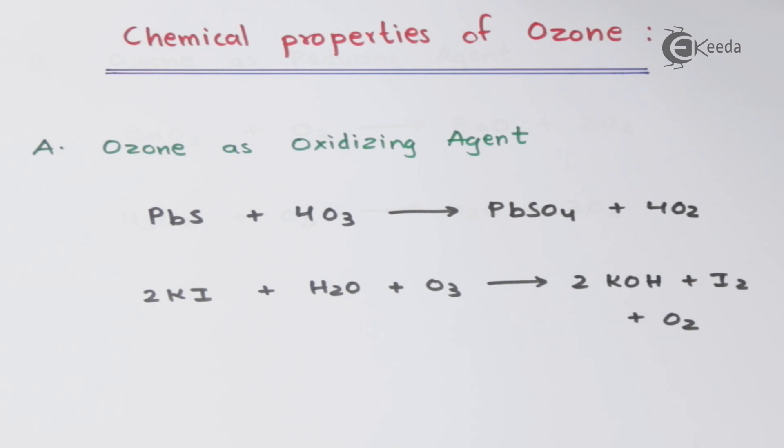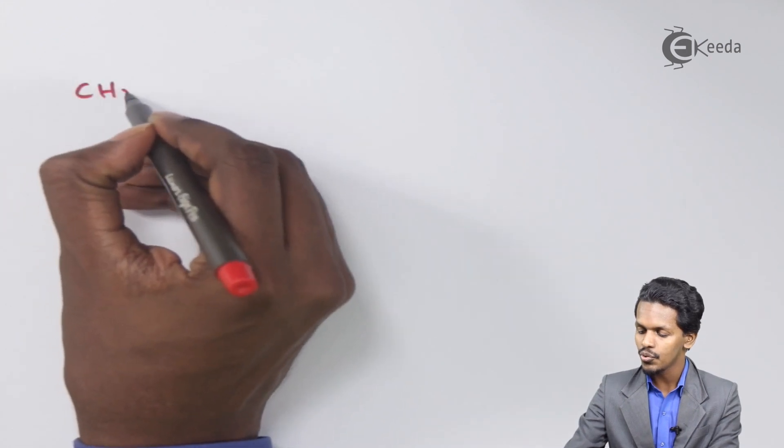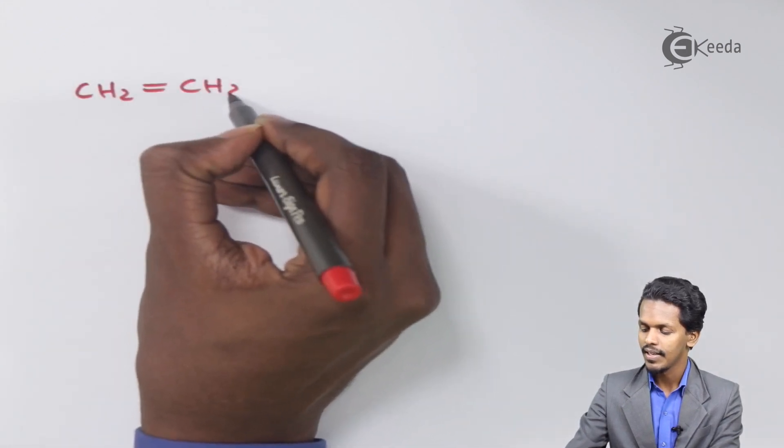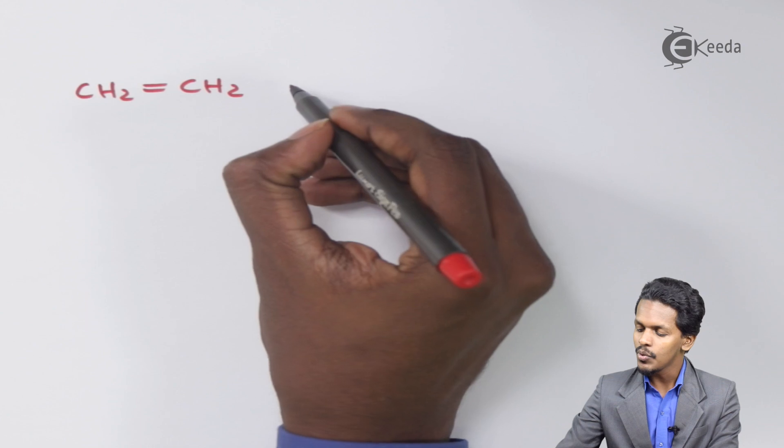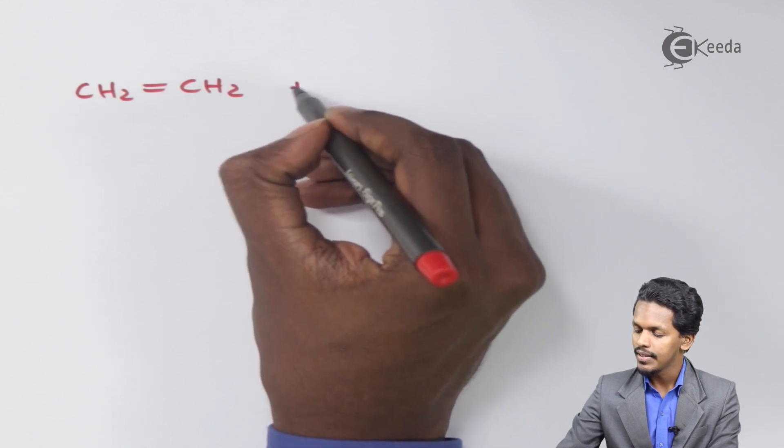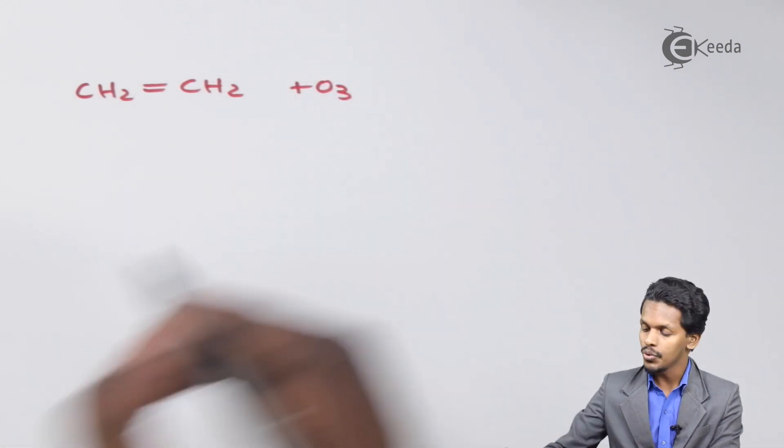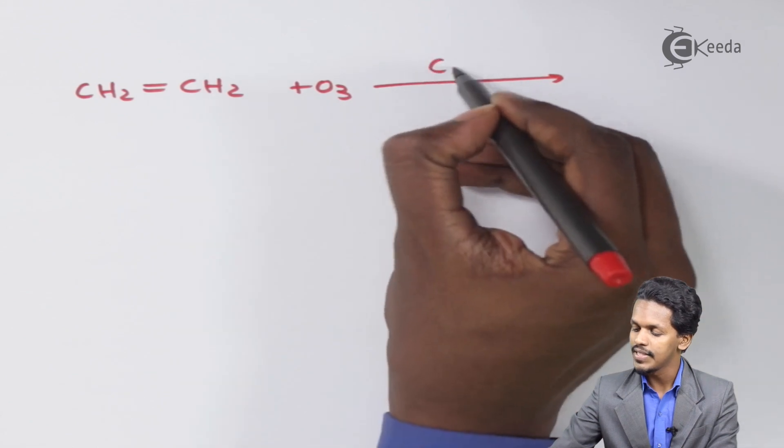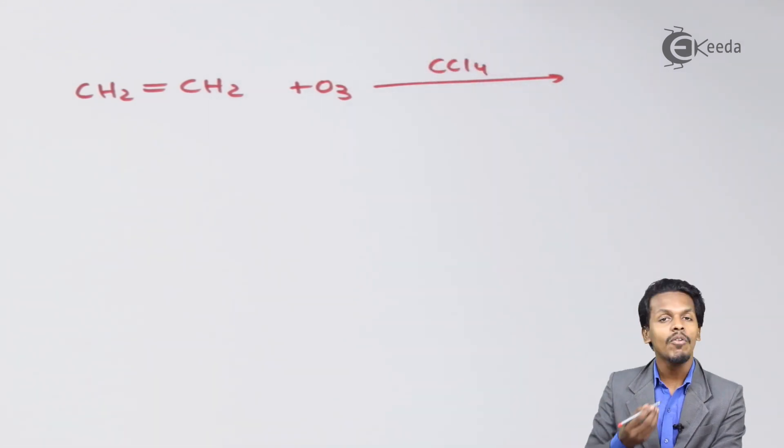What are the different properties? Let me talk about that. Ozone is also used to prepare aldehyde from alkenes. For example, suppose we consider CH2 double bond CH2, and if I'm using ozone in the presence of CCl4, there will be a production of ozonide.